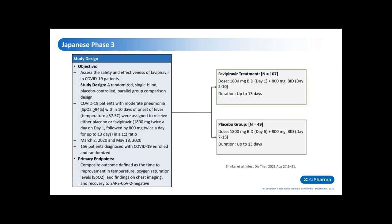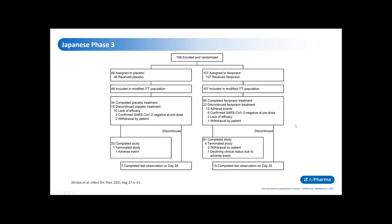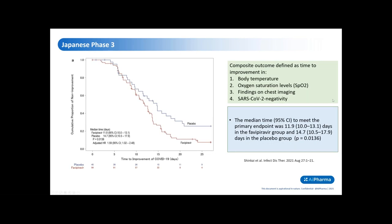The key word here is transient — once treatment is stopped, the elevated uric acid levels return to normal quite rapidly. Those were smaller-scale phase two trials. More recently, a Japanese team headed by Dr. Shinkai conducted a phase three trial in Japan. It was a randomized, single-blind, placebo-controlled, parallel-group comparison design. Patients were assigned on a one-to-two basis into the favipiravir arm and the placebo arm: 107 patients in the favipiravir arm and 49 in the placebo arm, for a total of 156 patients.